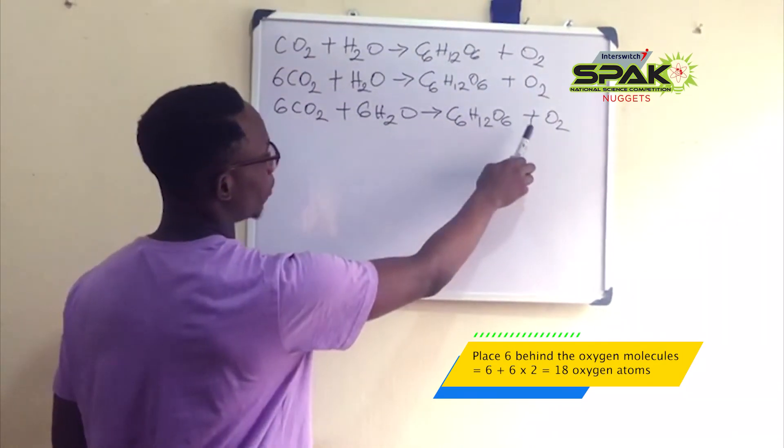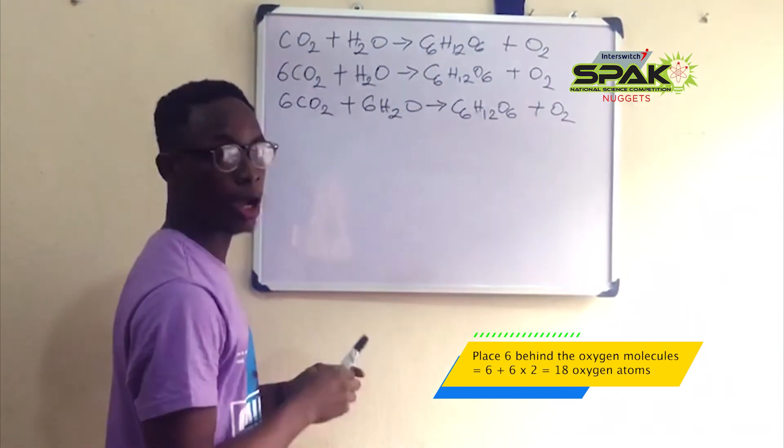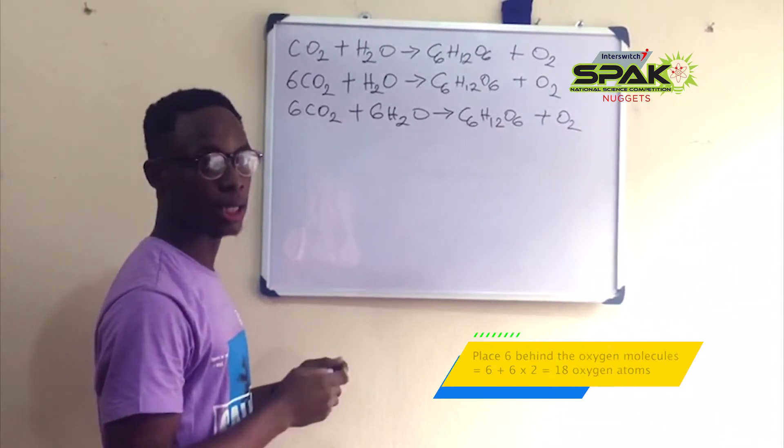We have 6 plus 6 times 2, that is 18 oxygen atoms. So, our oxygen atoms are balanced.